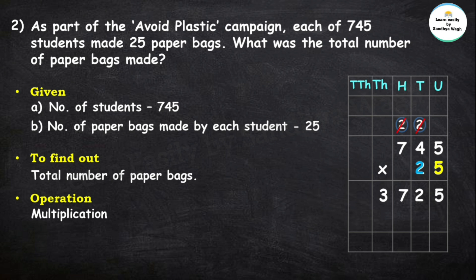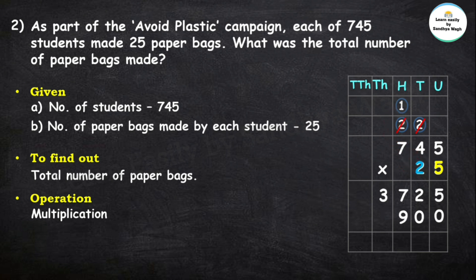If we cut the carrying over, we will have a confusion. 2 multiplied by 10, the unit place is 0. Now, 2 fives are 10, so 0 and 1 carrying over to the hundreds place. 2 fours are 8 plus this one is 9. 2 sevens are 14.